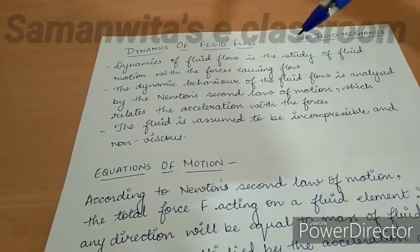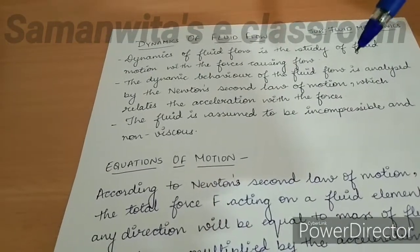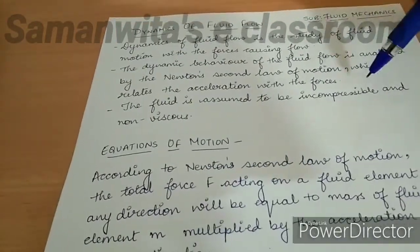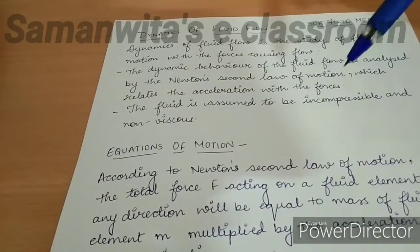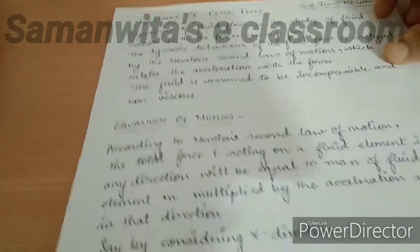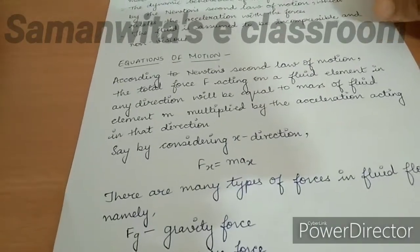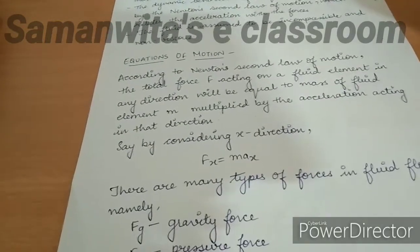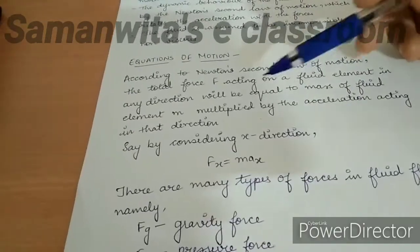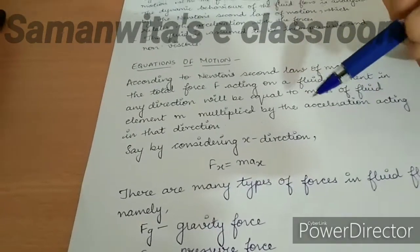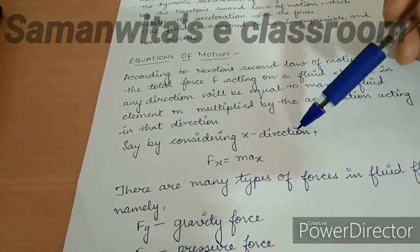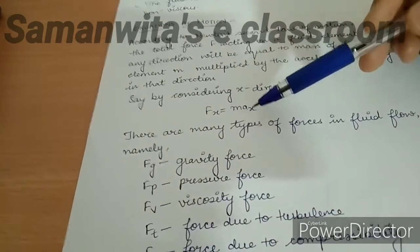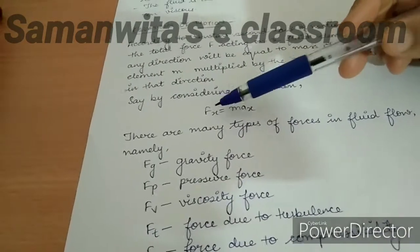Fluid dynamics is based on Newton's second law of motion, which is mainly used for deriving the equations. The fluid is assumed to be incompressible and non-viscous — meaning it is an ideal kind of fluid. According to Newton's second law, the total force acting in any direction equals the mass of the fluid element multiplied by the acceleration in that direction. For the x-direction: Fx = m × ax, where Fx is the summation of all forces acting in the x-direction.